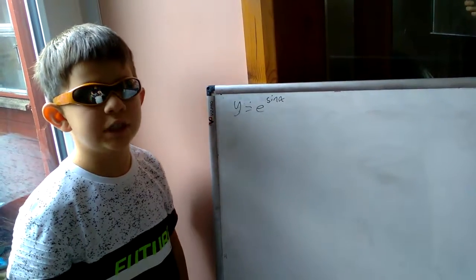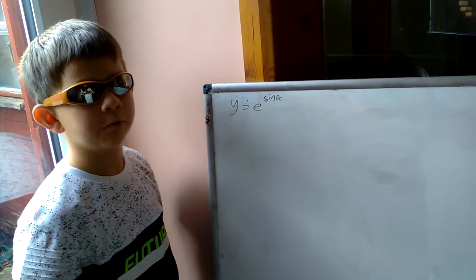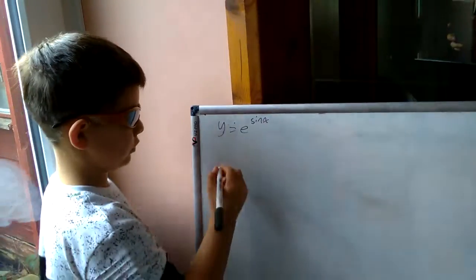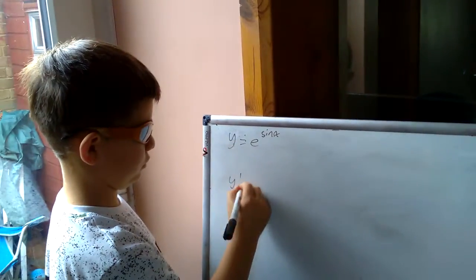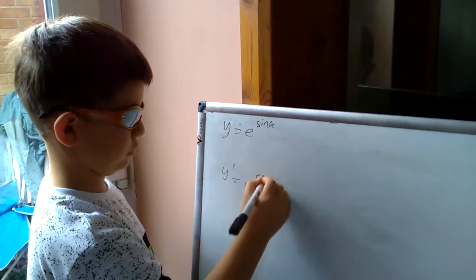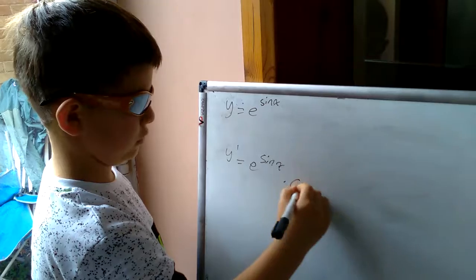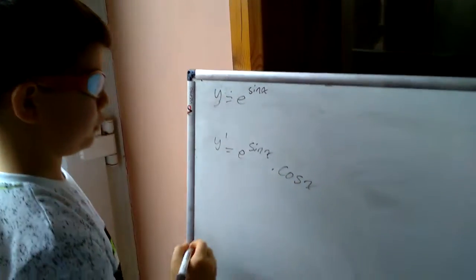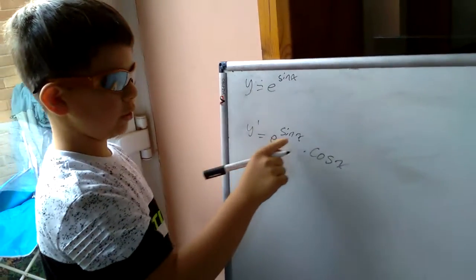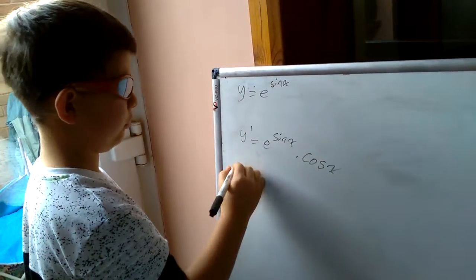Now first we want to do dy/dx, in other words the derivative, and make that equal zero. So now we want to make e to the power of sin x times cosine x equals zero.